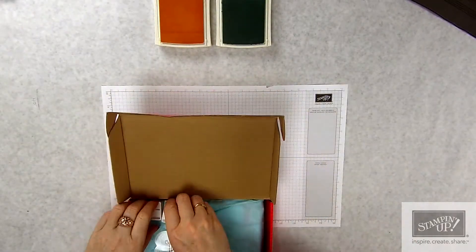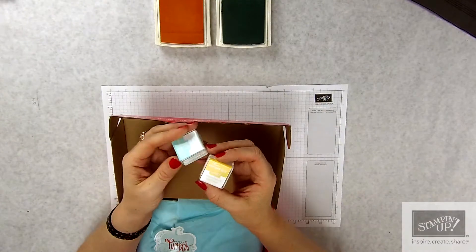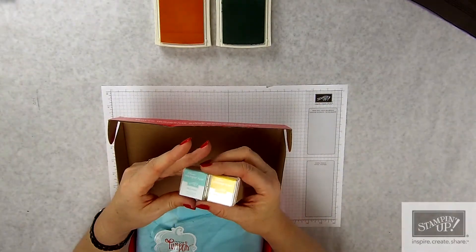So this is February's Paper Pumpkin, meaning it's the one that arrived in February. And I went ahead and opened it up. And since I'm using lots of ands today, I apologize.